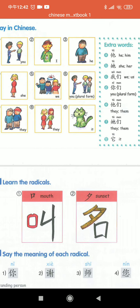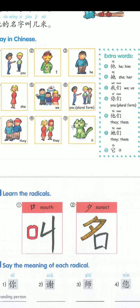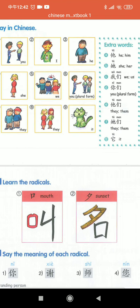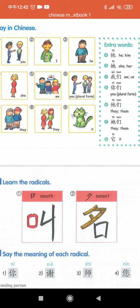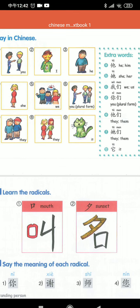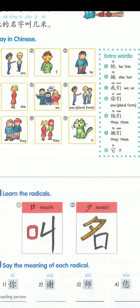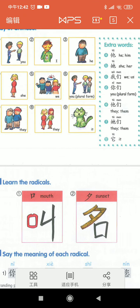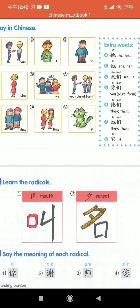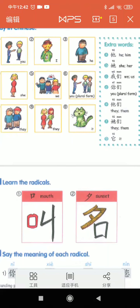If there are more than one person in a group, 'you' (plural) is 你们 (nǐmen). Then for others — 'they' — it is 他们 (tāmen). If the others are girls, 'they' is also 她们 (tāmen). For a cat, a dog, or other animals and things, it is 它 (tā).